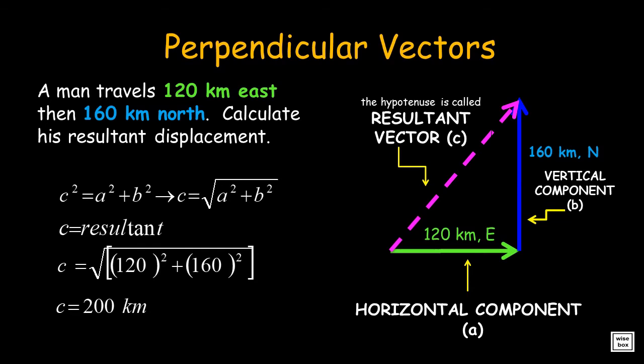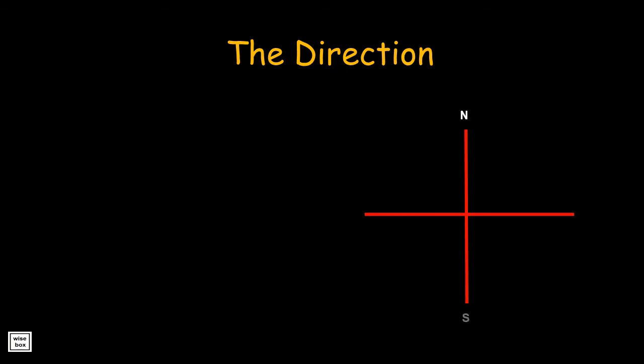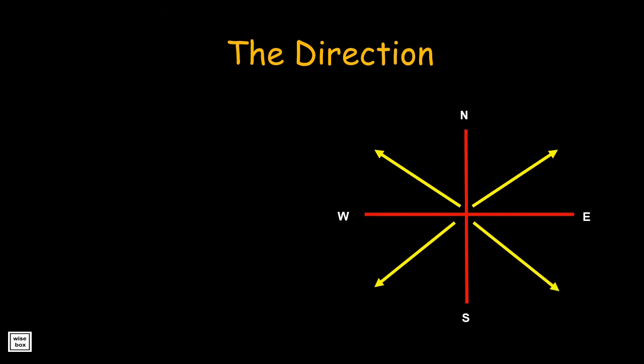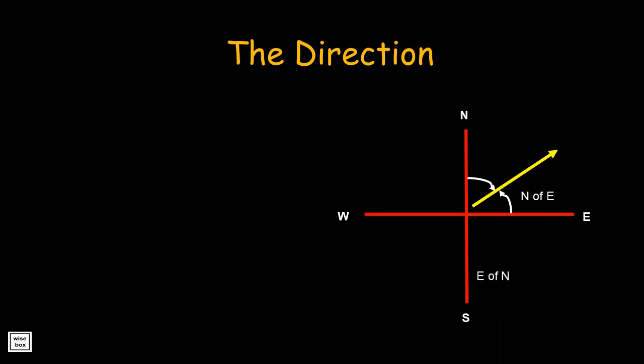Notice that what we have solved so far is the magnitude of the resultant vector. What about the direction? To answer that, we need to understand cardinal directions and angle of rotation. The cardinal directions are the four main points in your compass: north, south, east, and west. Your resultant vector may lie somewhere in between these points. If the angle of rotation starts from east to the north, then the direction is north of east. But if the angle of rotation starts from north going to east, then it's east of north.